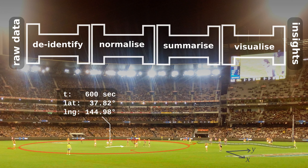For example, to de-identify data, football teams typically replace player names with a unique code. However, players can be easily re-identified by cross-referencing the GPS location with a photo at a known point in time, like the one you see here.